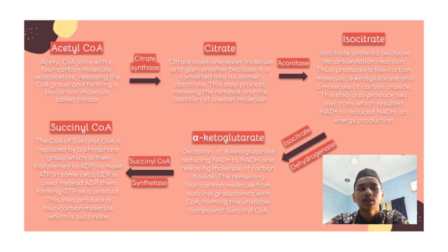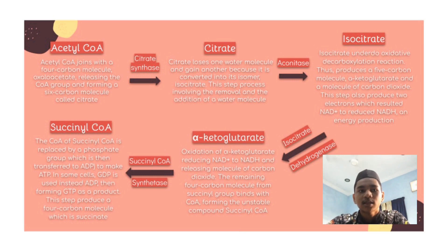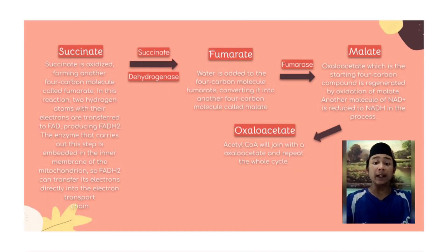In the fifth step, the coenzyme A of succinyl-CoA is replaced by a phosphate group, which is then transferred to ADP to make ATP. In some cells, GDP is used instead of ADP, forming GTP as a product instead. This produces a four-carbon molecule called succinate, catalyzed by the succinyl-CoA synthetase enzyme.